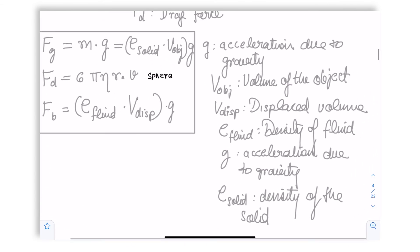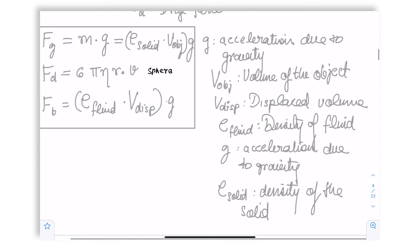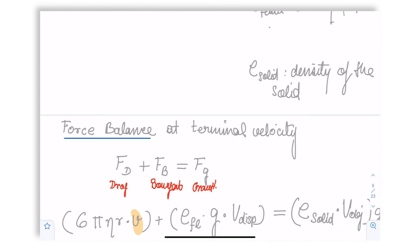So just to go over our terms: g is gravitational acceleration, v object is the volume of the object, v displaced is the volume of the displaced fluid, rho fluid is the density of the fluid, and rho is the density of the solid. So when we go ahead, we can write down a force balance at terminal velocity. What this means is just simply that at the time of terminal velocity, the downward forces and the upward forces are balanced.